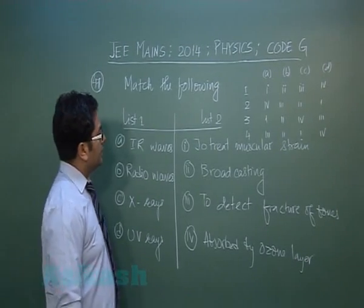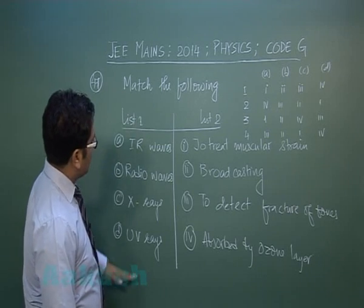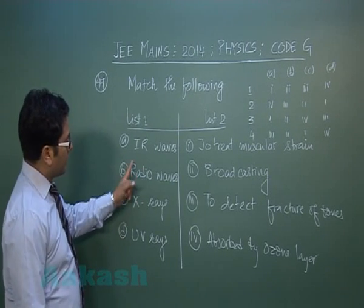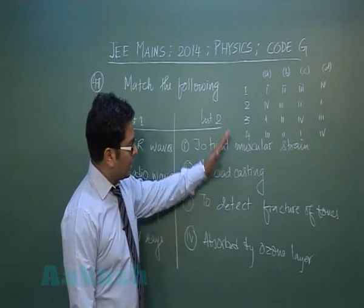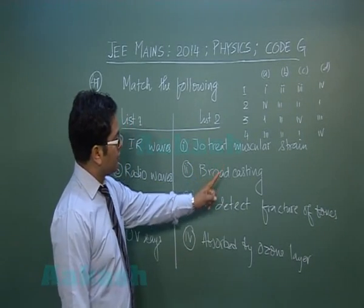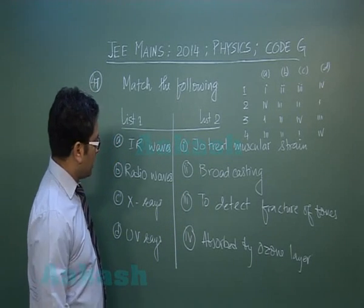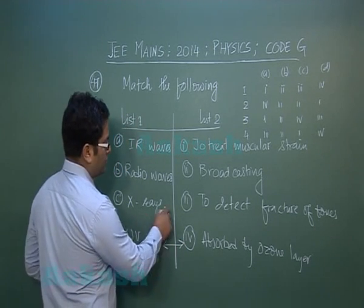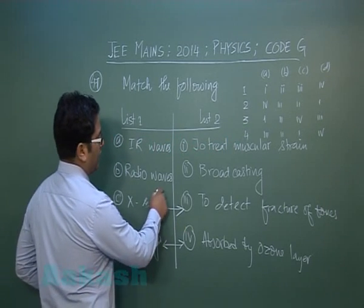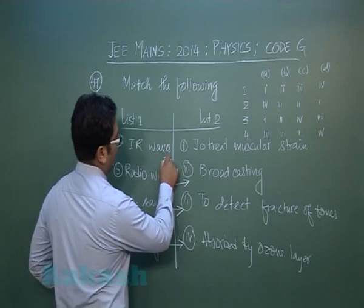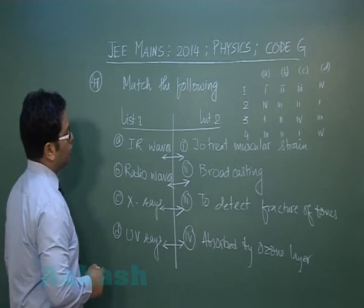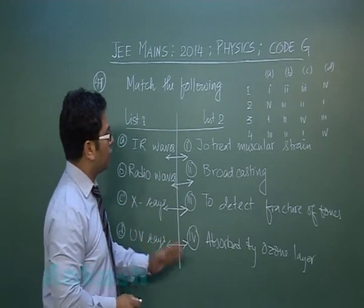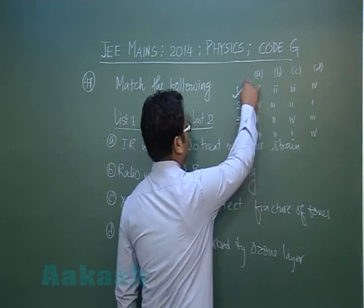Let's go to question number 47 — match the following. List one has electromagnetic waves: infrared, radio, X-ray, and ultraviolet. List two has their utilities: treat muscular strain, broadcasting, detect fracture, and absorbed by ozone. Straightaway: ultraviolet is absorbed by the ozone layer, X-ray detects fractures, radio waves are used for broadcasting, and infrared treats muscular strain via IR imaging. So A with 1, B with 2, C with 3, D with 4 — option number 1 is correct.